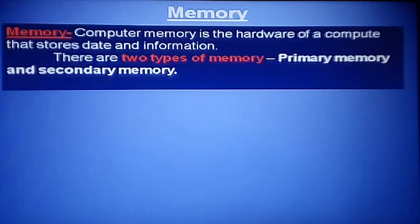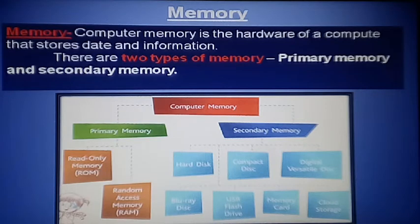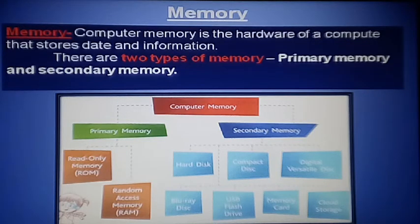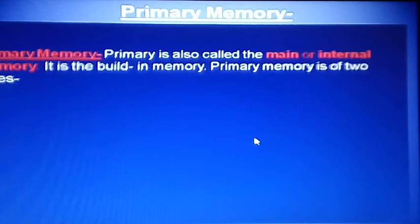There are two types of memory: primary memory and secondary memory. With the help of a diagram, I will explain. Primary memory is stored inside the computer — examples include RAM (Random Access Memory) and ROM (Read Only Memory). Secondary memory includes hard disk, compact disk, Blu-ray, and pen drive — these are extra external storage devices.